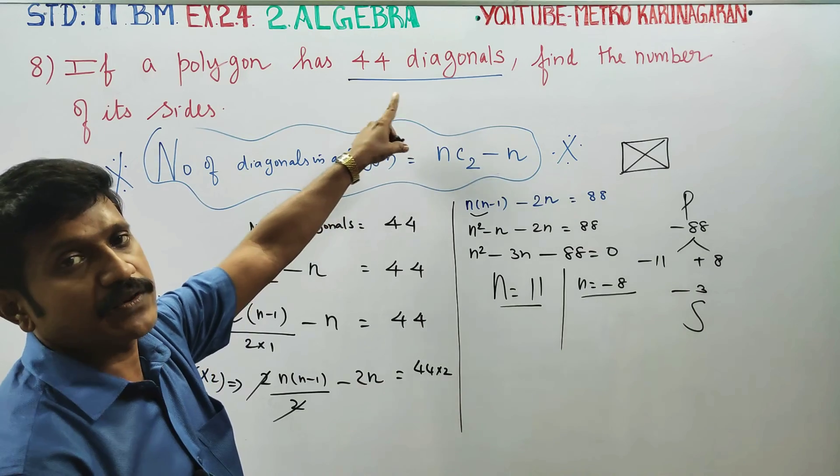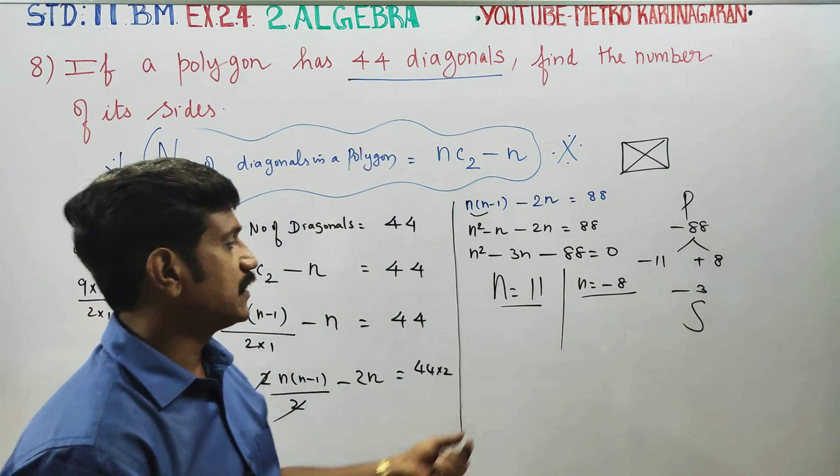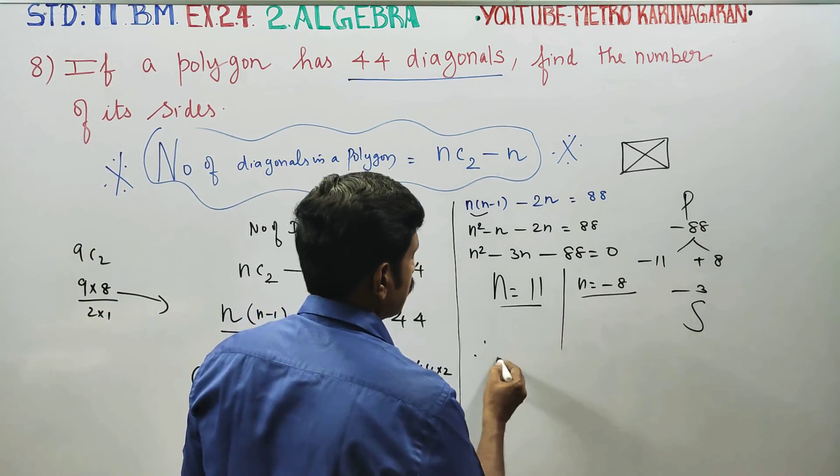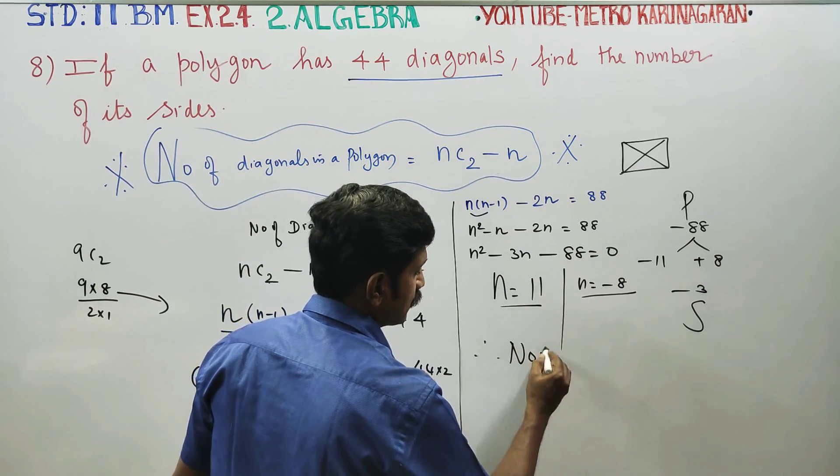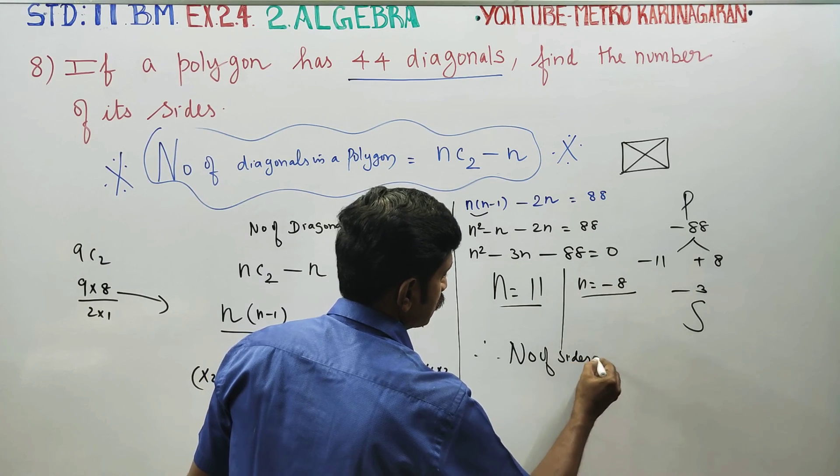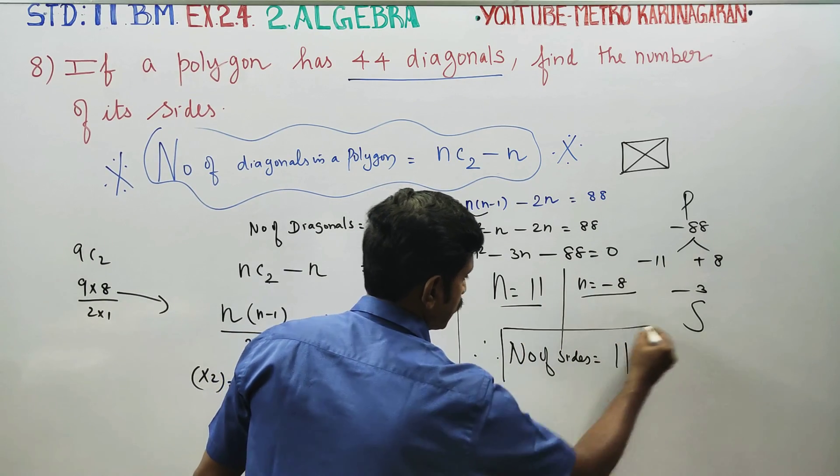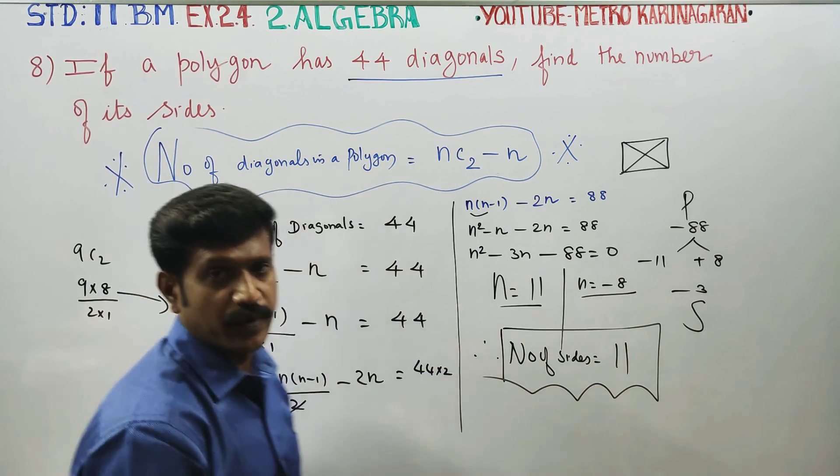n is equal to minus 8 or 11. For a polygon, the number of sides cannot be negative. Therefore, the number of sides is equal to 11. This is your final answer for this problem. Thank you.